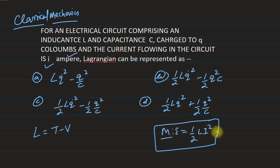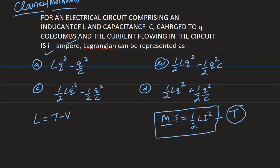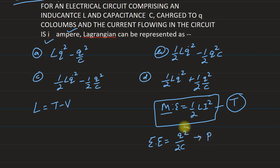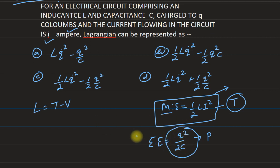This magnetic energy is basically analogous to kinetic energy for the LC circuit. In this LC circuit, the electrostatic energy stored in the capacitor is simply q squared by 2C. This electrostatic energy is analogous to potential energy. So the energy stored in the inductor is half LI squared, and the electrostatic potential energy is q squared by 2C.